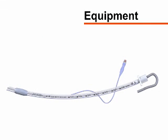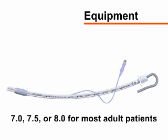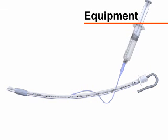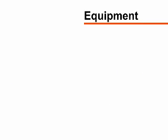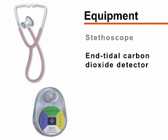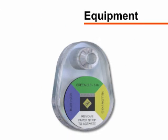Endotracheal tubes are sized according to the internal diameter of the tube. 7.0, 7.5, or 8.0 millimeter tubes are appropriate for most adults. The tubes have a balloon on the distal end that, when inflated, creates a seal between the tube and the tracheal lumen and prevents air leaks and aspiration of gastric contents. You will also need a stethoscope and an end-tidal carbon dioxide detector to assess for proper placement of the endotracheal tube. Commonly used detectors change color in the presence of carbon dioxide.